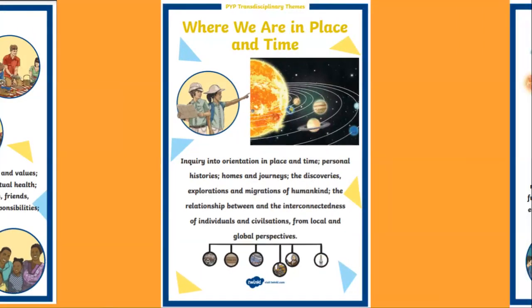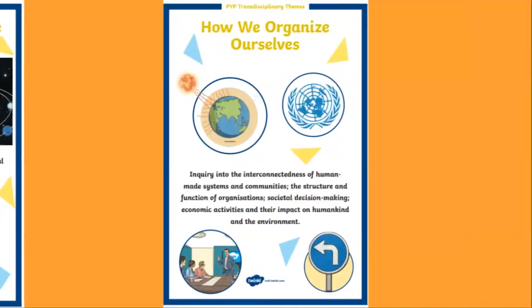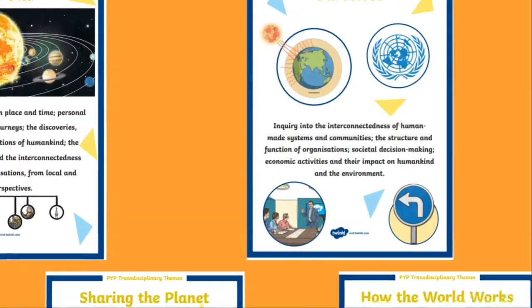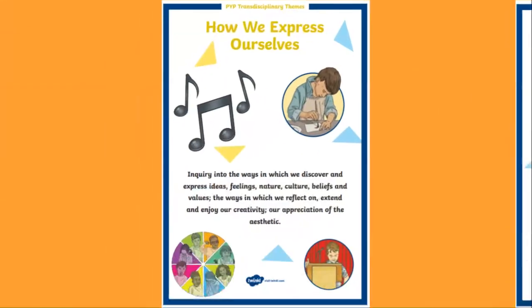The second transdisciplinary theme is 'Where We Are in Place and Time,' which talks about historians and explorers. The third unit, 'How We Organize Ourselves,' discusses organizations that aim to help people, nature, and organisms. The fourth transdisciplinary theme, 'How We Express Ourselves,' focuses on poetry.